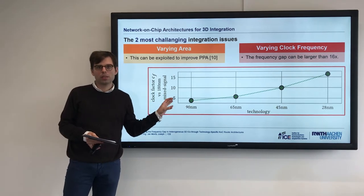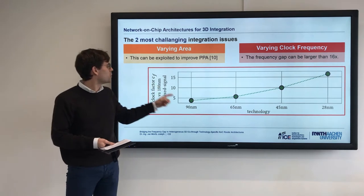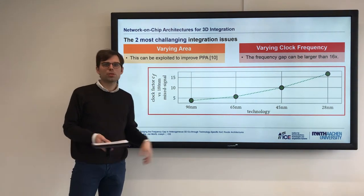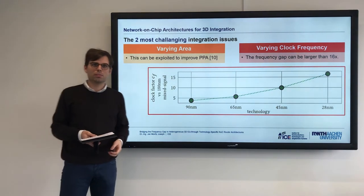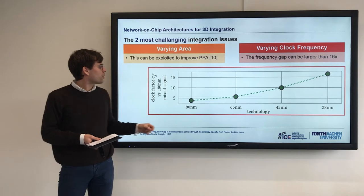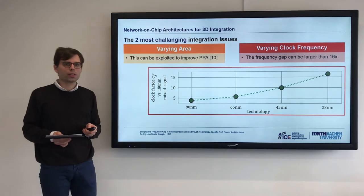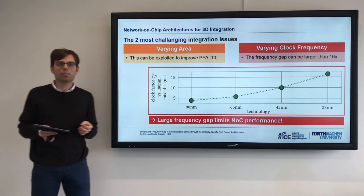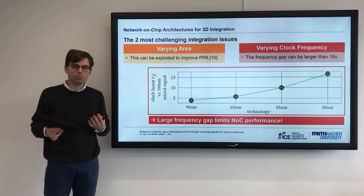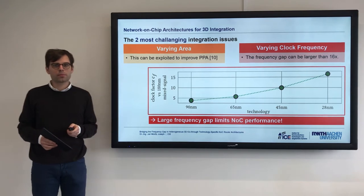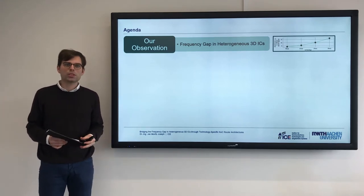If you use the same router architecture in all layers, there will be a clock frequency gap as large as 16x, shown here with a graph combining 180nm mixed signal technology with different digital technologies. Please note these are academic examples applicable to more modern technologies. The key thing is the difference between technologies — a factor of one to two, for example combining a 30nm mixed signal node with a 15nm digital node — yielding a clock factor of 4x to 16x. This large clock frequency gap limits the NOC performance, because your slowest NOC router dominates the performance of the whole NOC.